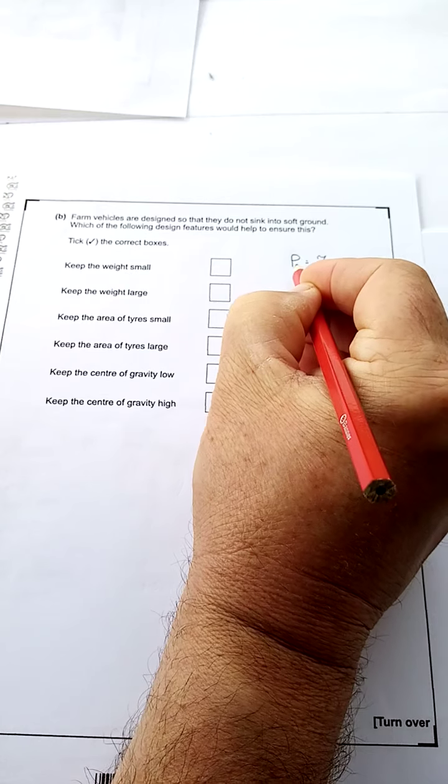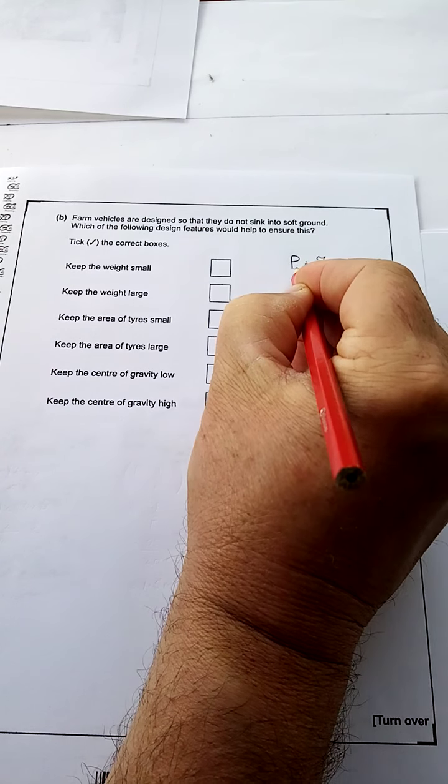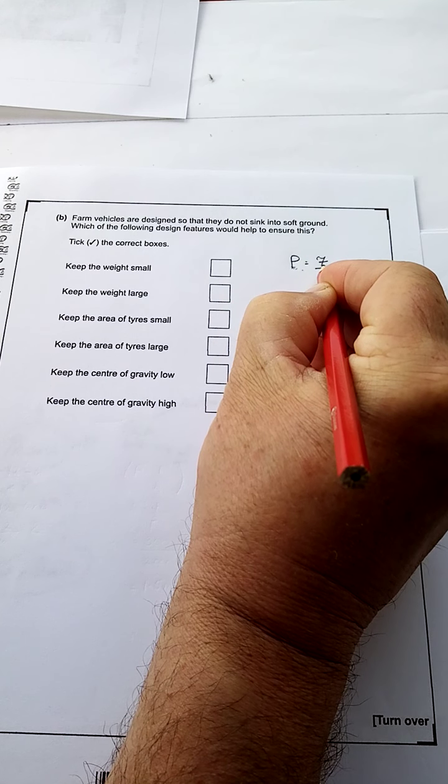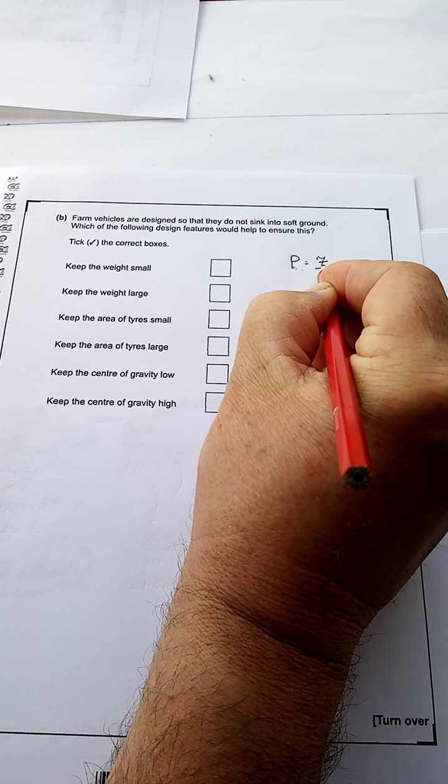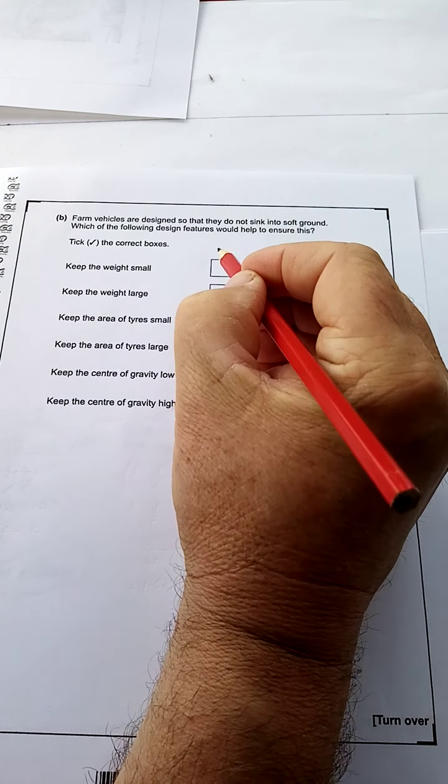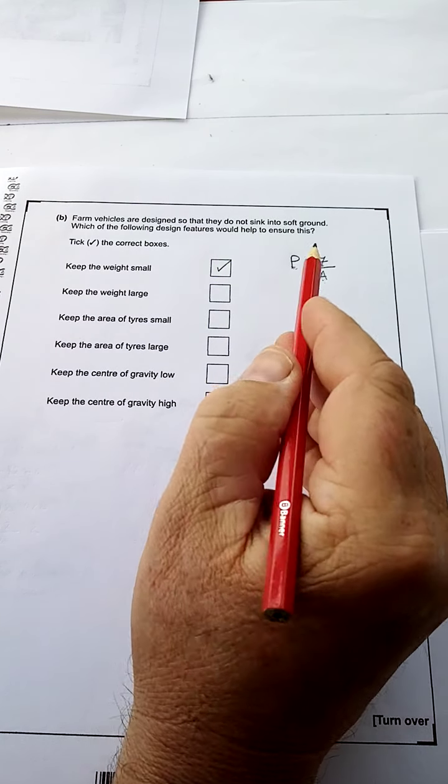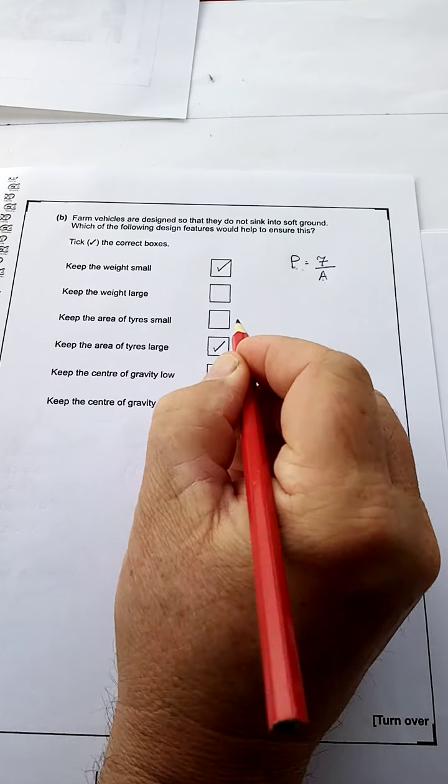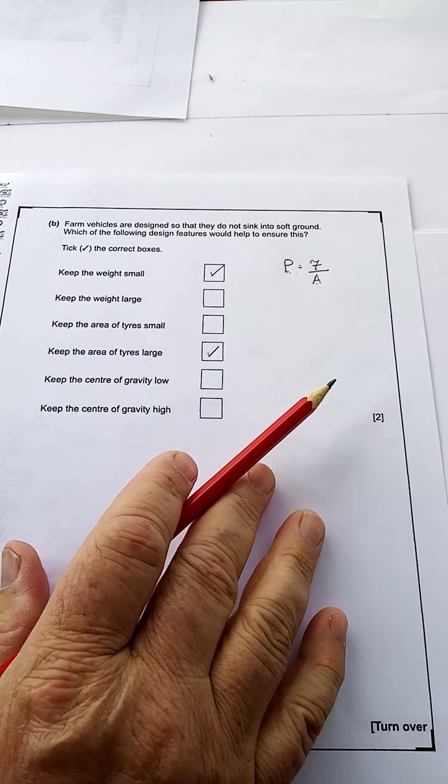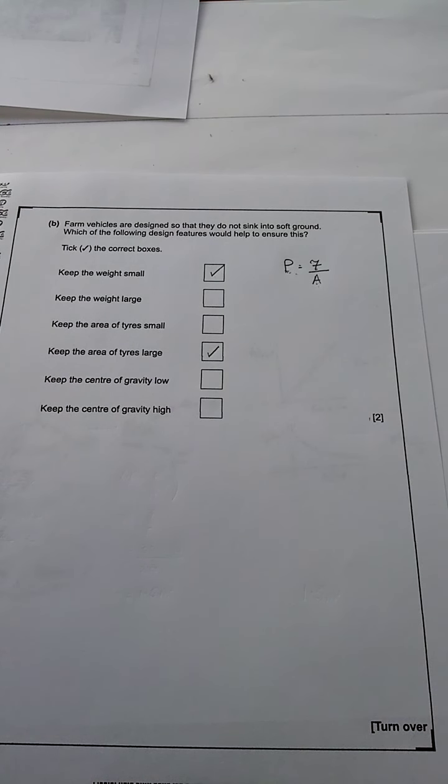So I want the force small. I want the weight small. I want the area big. Remember, big area, small pressure. Small area, big pressure. They're inversely proportional. Pressure and force are directly proportional. So I want to make the farm vehicle have a low pressure. So I must keep the weight small. Weight is force. I must keep the area large. Now, it would be handy to have the center of gravity low, but that's nothing to do with the pressure. So therefore there's your two ticks for your two marks. So there's question one done.